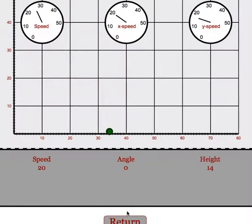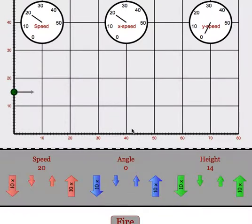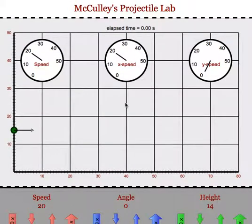The types of labs that we can do with this are numerous. We can plot range versus speed, range versus height, changing one variable at a time. We can adjust angles and look at time in the air, range, whatever we would like to look at.